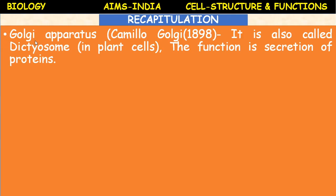The Golgi apparatus was discovered by Camillo Golgi in 1898. It is also called dictyosome in plant cells. The function of the Golgi apparatus is secretion of proteins. It consists of stacks of membrane-bound vesicles that function in storage.